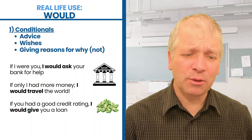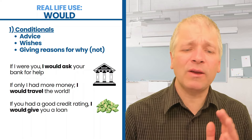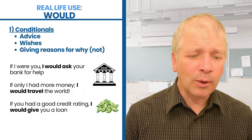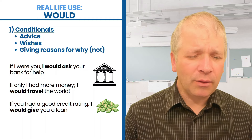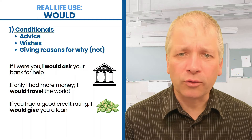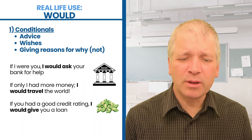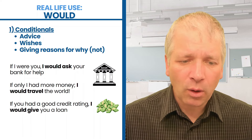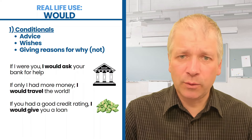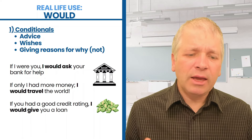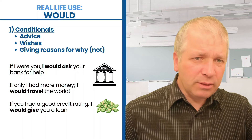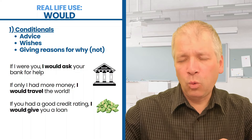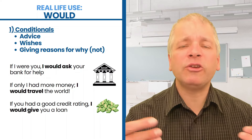Conditionals can also be used with would for giving reasons why, or giving reasons why not. For example: if you had a good credit rating, I would give you a loan. This is indicating a reason why not. Probably before this sentence, a person has said I'm not going to give you a loan, and now they need to explain why. It's using a conditional to say this is the unreal situation — if the unreal situation was real, then my decision would be different.